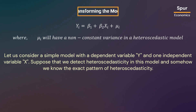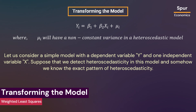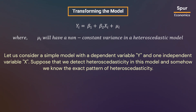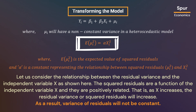Let us consider a simple model with dependent variable Y and one independent variable X as shown here. Suppose we detect heteroskedasticity in this model and we know the exact pattern. For illustration, consider the relationship between the residual variance and the independent variable X as shown here. The squared residuals are a function of X and are positively related — that is, as X increases, the residual variance or squared residuals will increase, so the variance of residuals will not be constant.